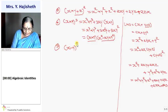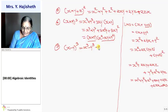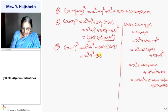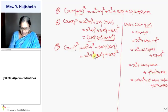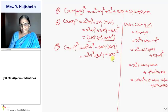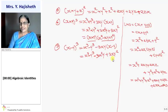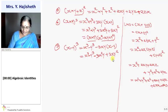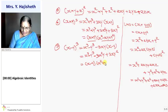Seventh: x minus y whole cube equals x cubed minus y cubed minus 3xy times (x minus y). So the answer is x cubed minus y cubed minus 3x squared y plus 3xy squared — three times negative, two times negative, one time positive. Another way of writing this in factors: x minus y into x squared plus xy plus y squared.